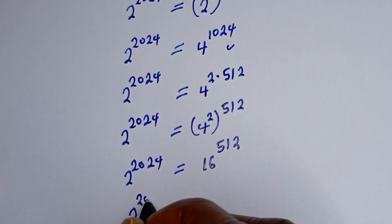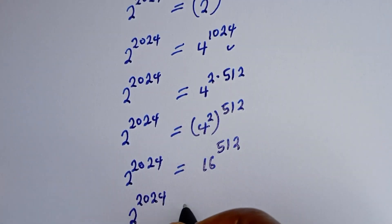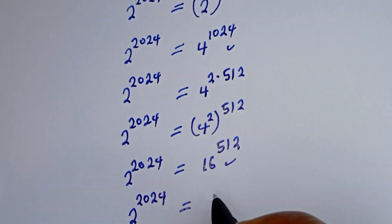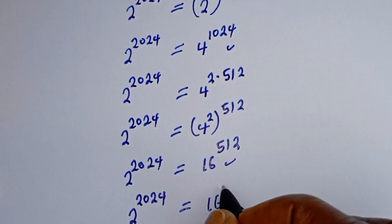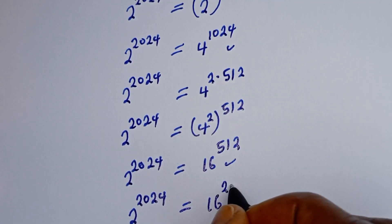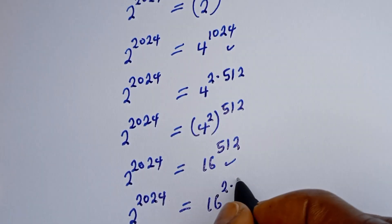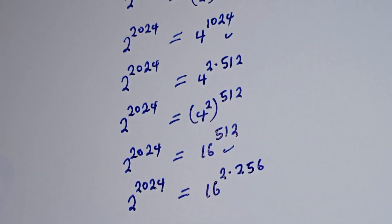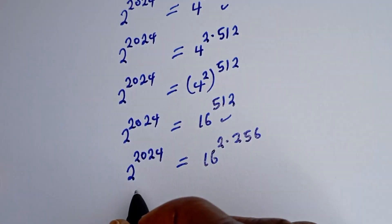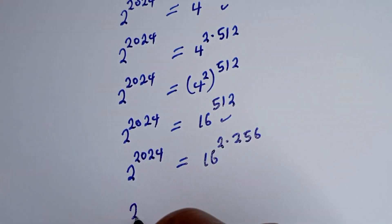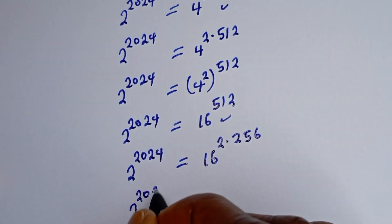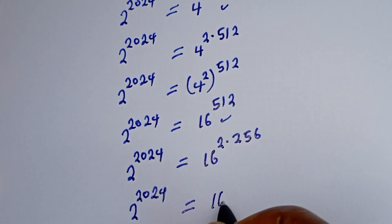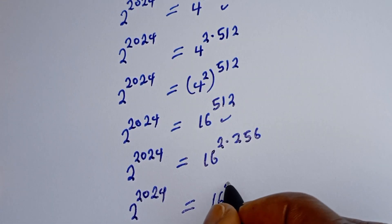Now 2 to the power of 2024 is equal to 16 to the power of 512, which can be written as 16 to the power of 2 multiplied by 256. Then 2 to the power of 2024 is equal to 16 squared — which is 256 — to the power of 256. Therefore, since s to the power of s equals 256 to the power of 256, we get s equals 256.